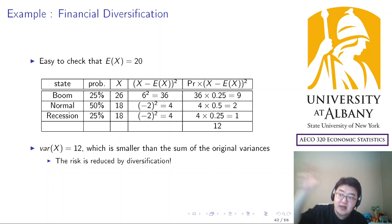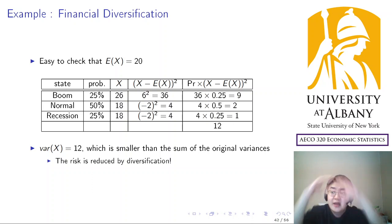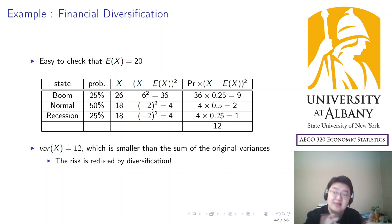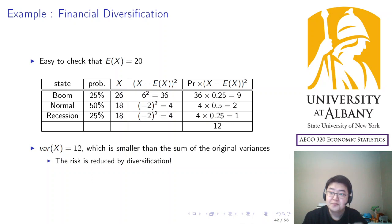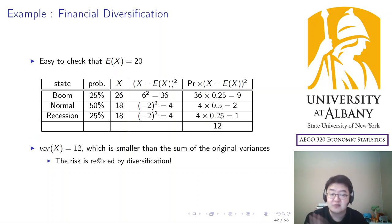B is safer than A, so you're mixing a safe asset and a risky asset, yet the new portfolio is even less risky than investing everything on B. Even though the portfolio includes the risky asset A, it is less risky than putting the same total amount entirely into the safer asset B. This is the result of negative covariance.